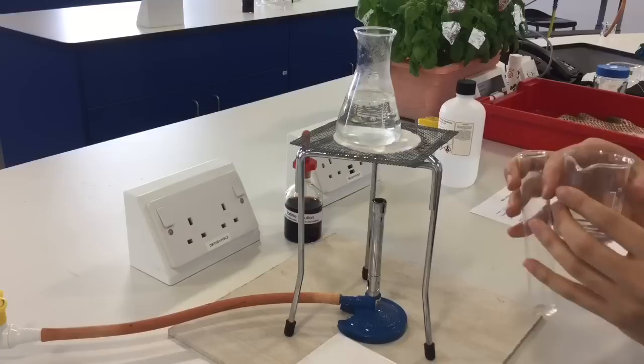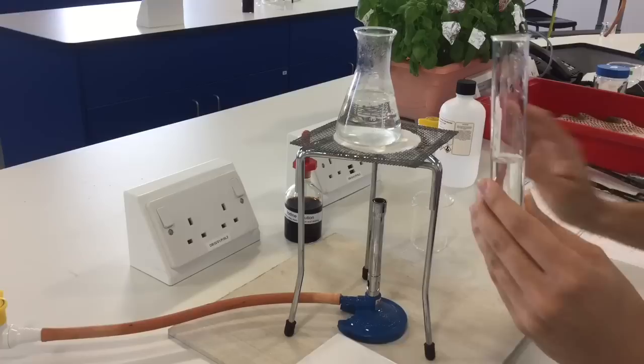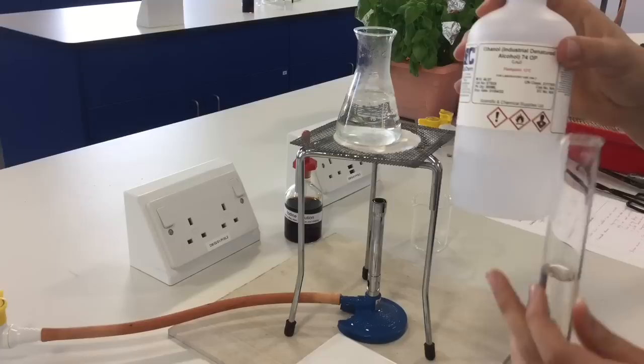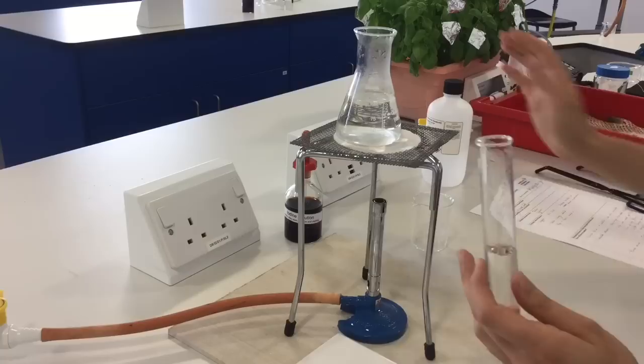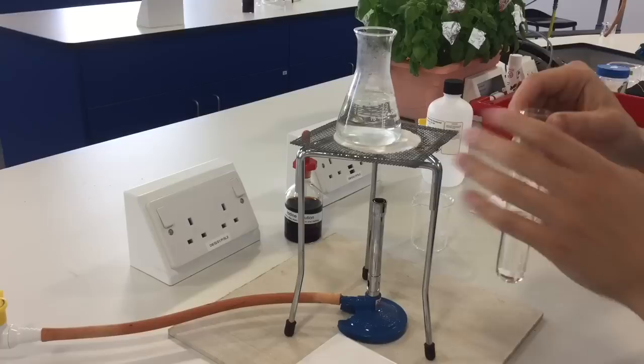Ethanol goes into our boiling tube. When we're doing this, we've got to be completely sure that no ethanol has dripped anywhere or gone on to the outside of anything, because as it says on the bottle, ethanol is highly flammable. Obviously working with a Bunsen burner, that could cause some problems. Just make sure there's no spillages anywhere.